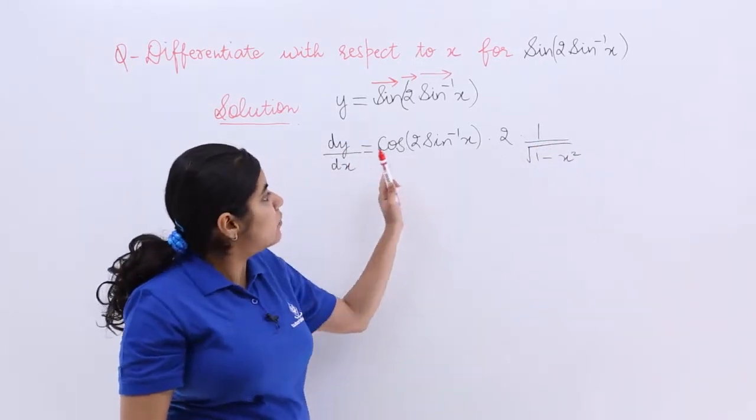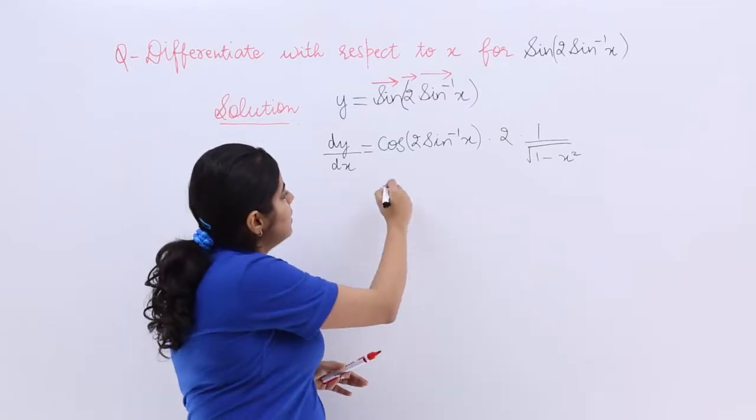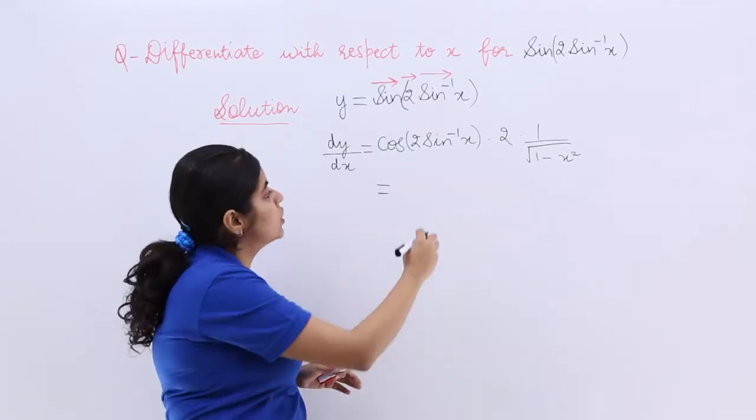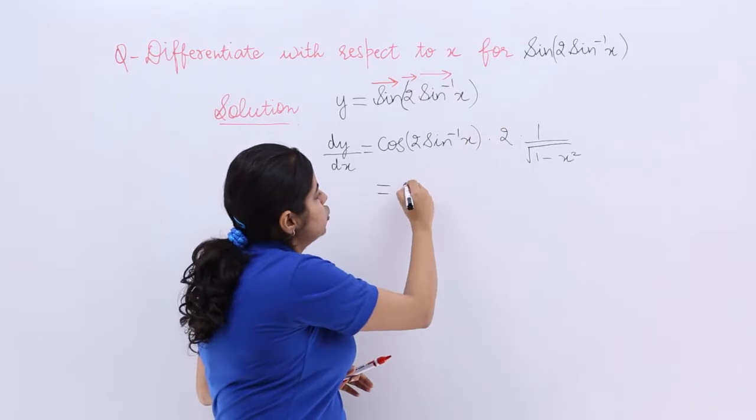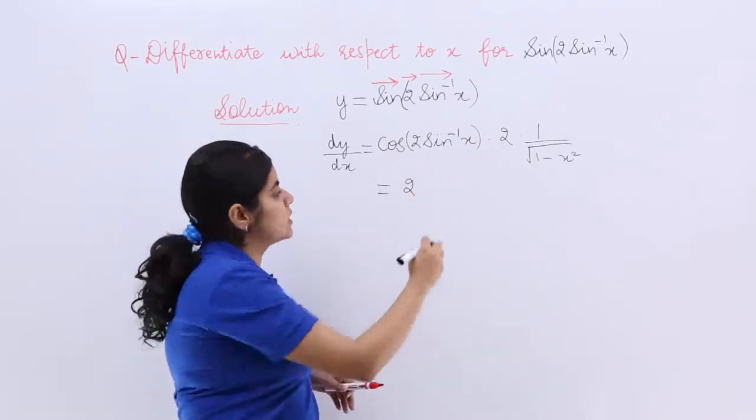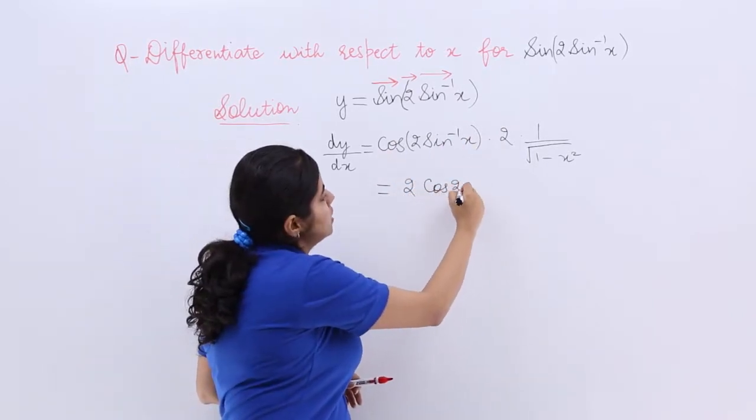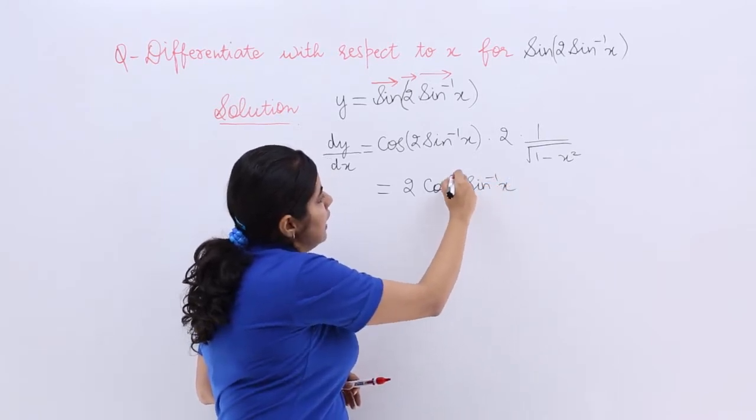Now since everything is multiplied, you can sort this in some manner, else the answer here also is perfect. So it is 2 ones are 2 cos of 2 sin inverse x.